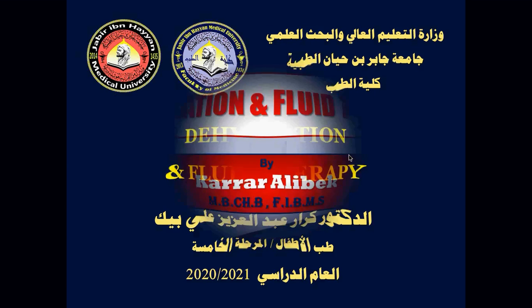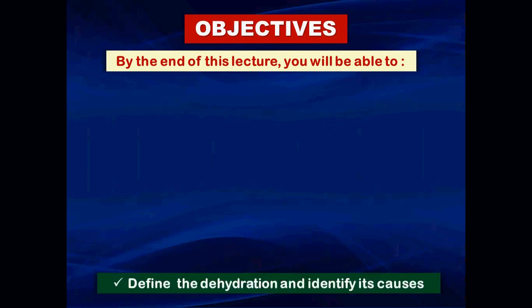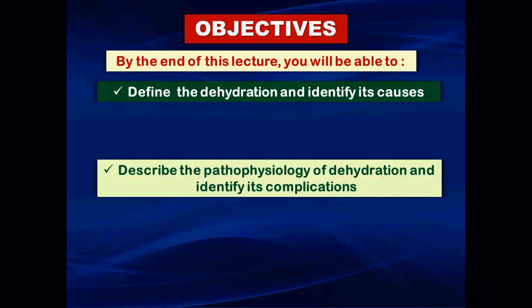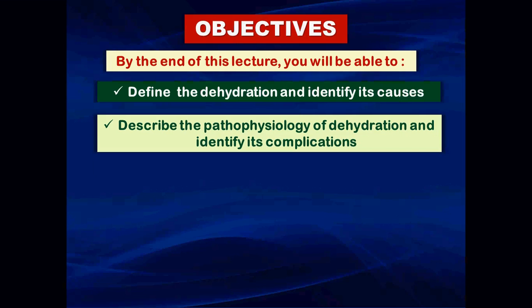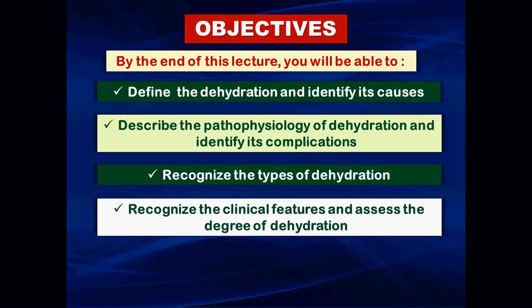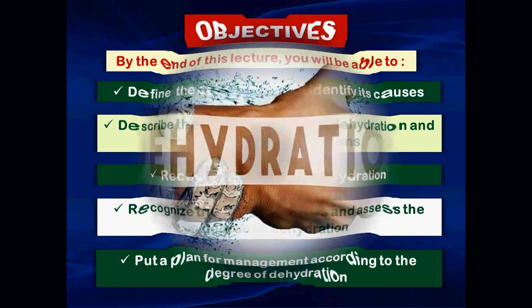Our objectives are: to identify dehydration and its causes; to describe the pathophysiology and identify its complications; to recognize the types of dehydration; to recognize the clinical features and assess the degree of dehydration; and finally, to put a management plan according to the degree of dehydration.